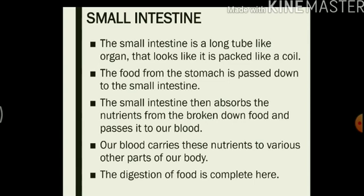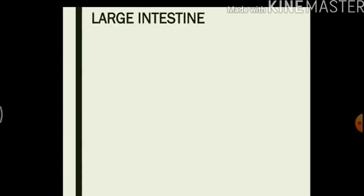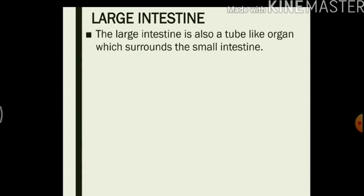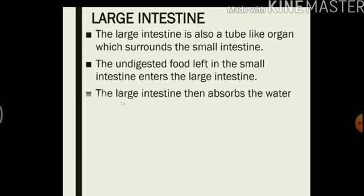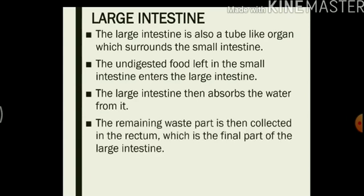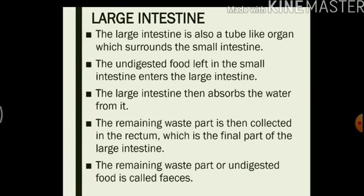Now what happens to that undigested food? This undigested food then goes to the large intestine. The large intestine is also a tube-like organ which surrounds the small intestine. The undigested food left in the small intestine enters the large intestine, where the large intestine absorbs the water from the undigested food. The remaining waste part is then collected in the rectum, which is the final part of the large intestine. The remaining waste part or undigested food is called feces.